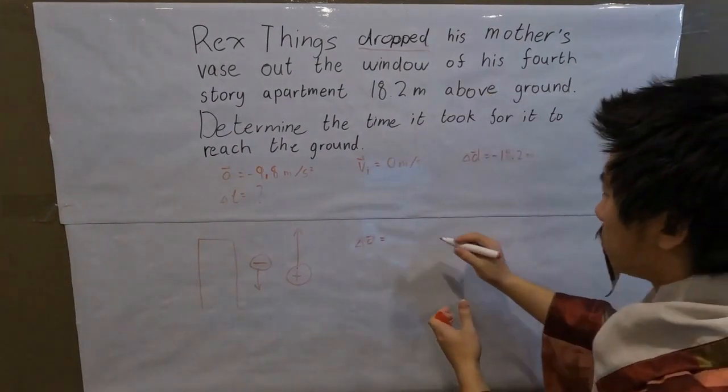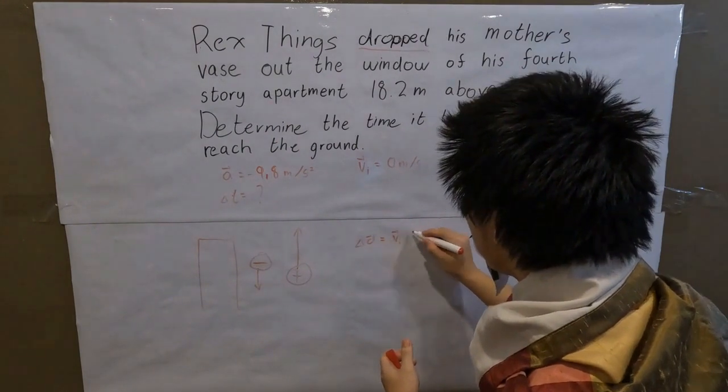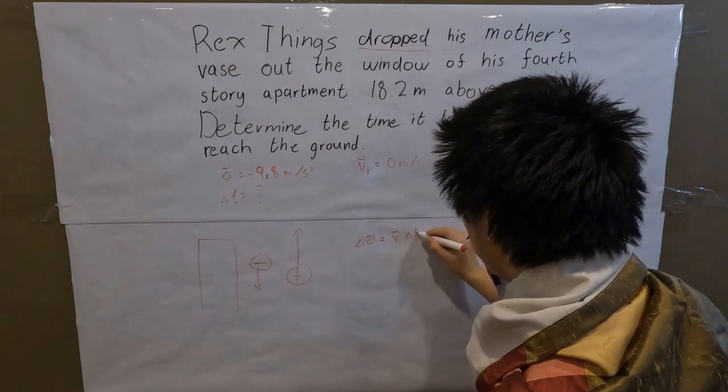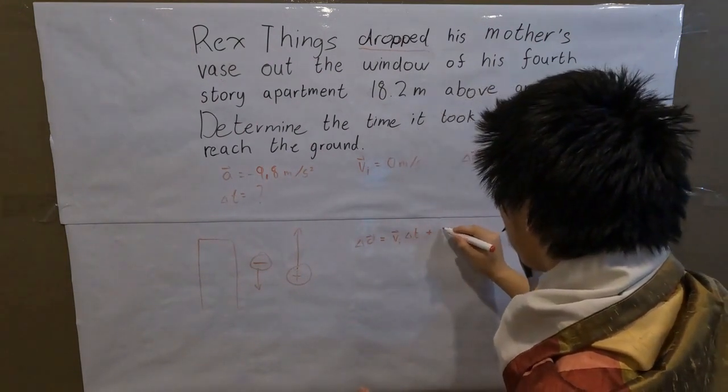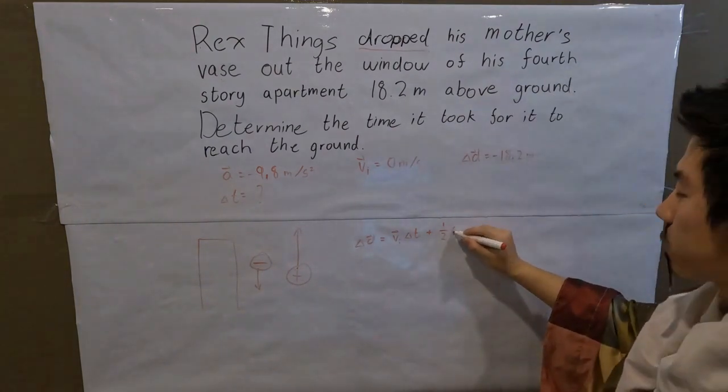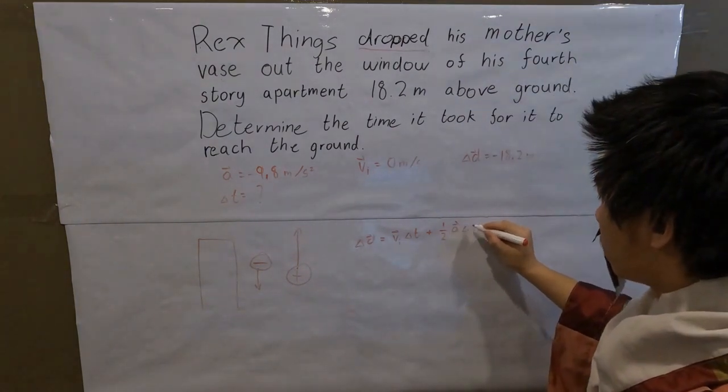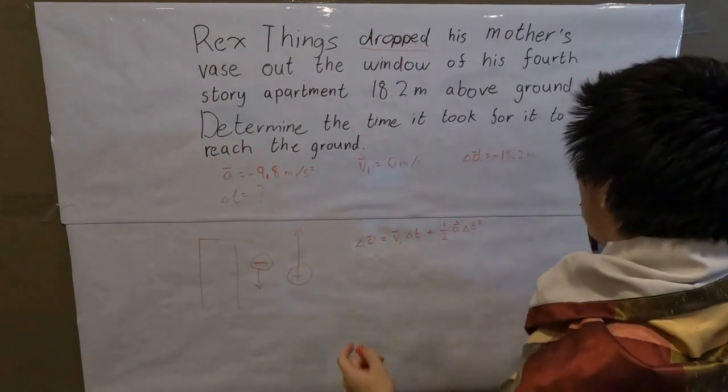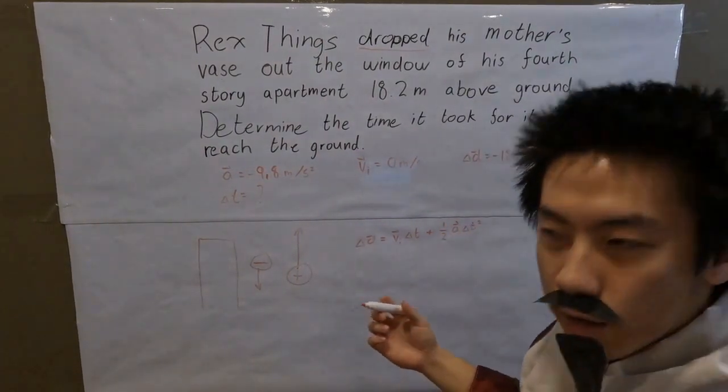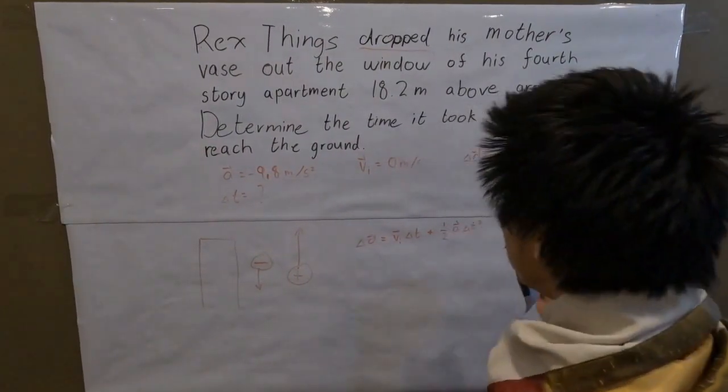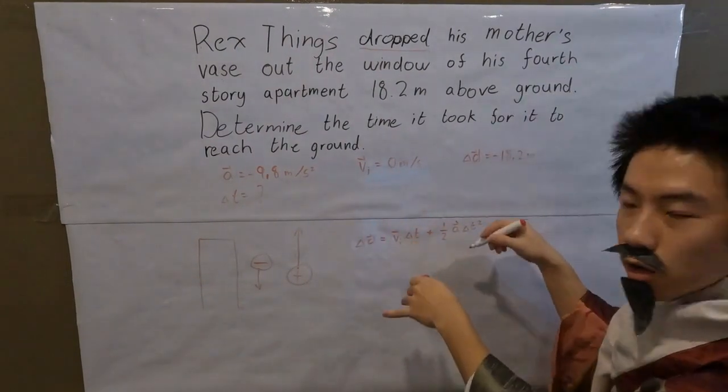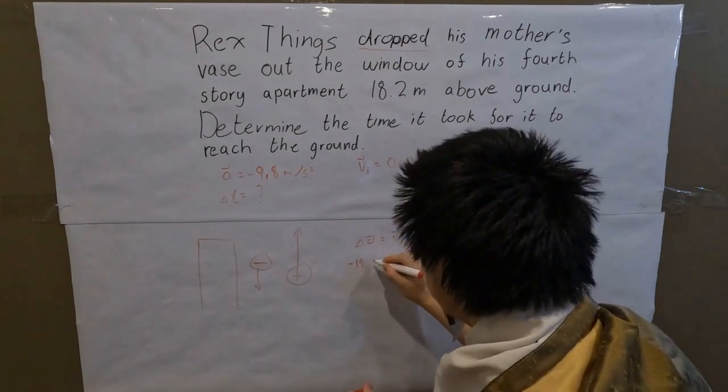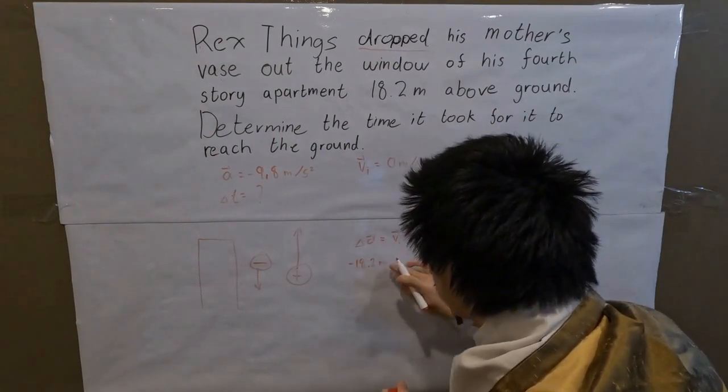...is equal to initial velocity multiplied by time, plus one-half acceleration times time squared. Once we have our variables and our equation, the next steps are very easy. It's just math. Okay, so we plug in. We enter our variables, and so displacement is negative 18.2 meters. We don't have to write meters.